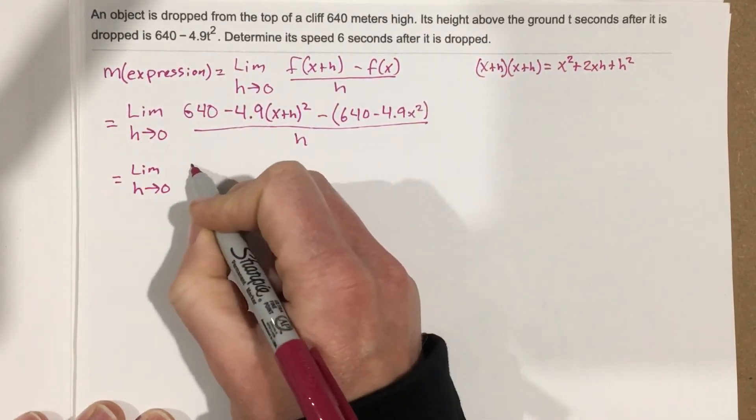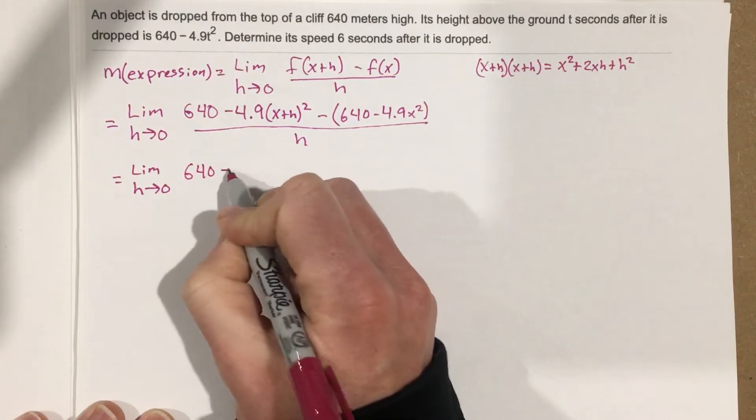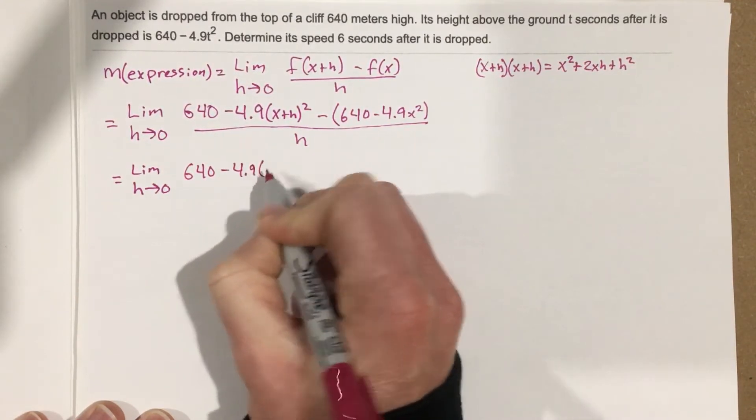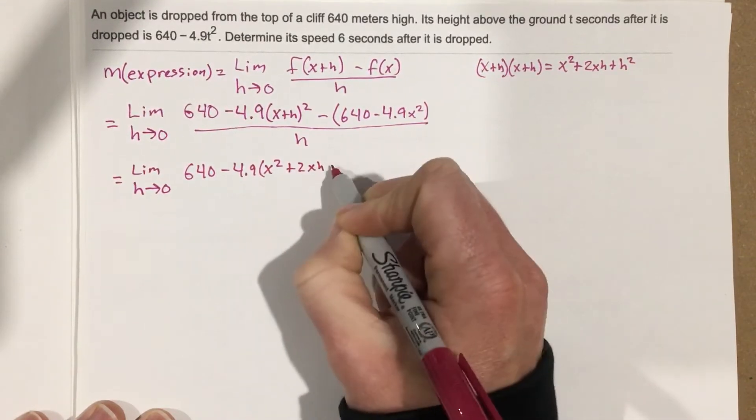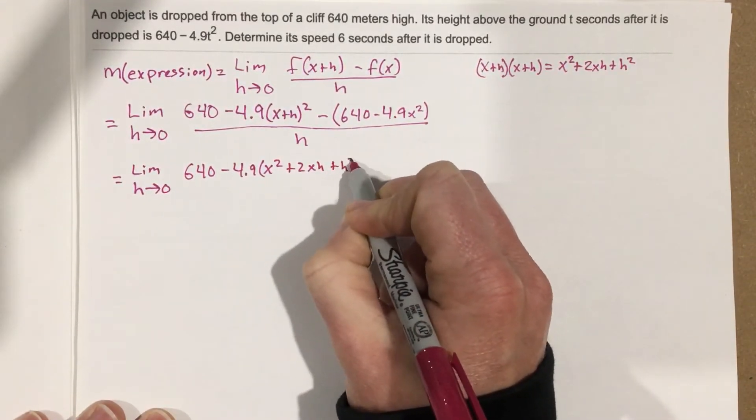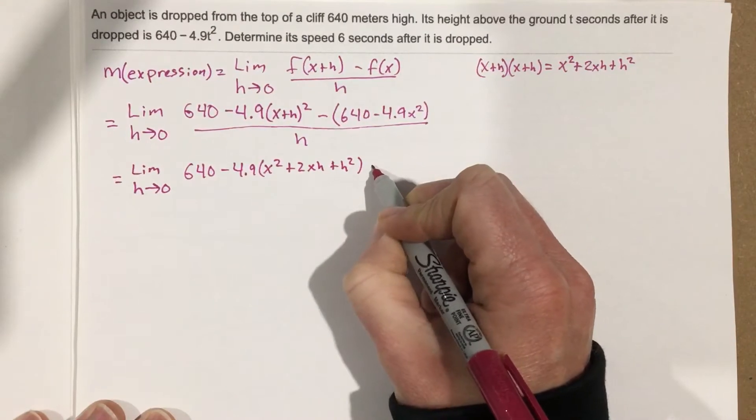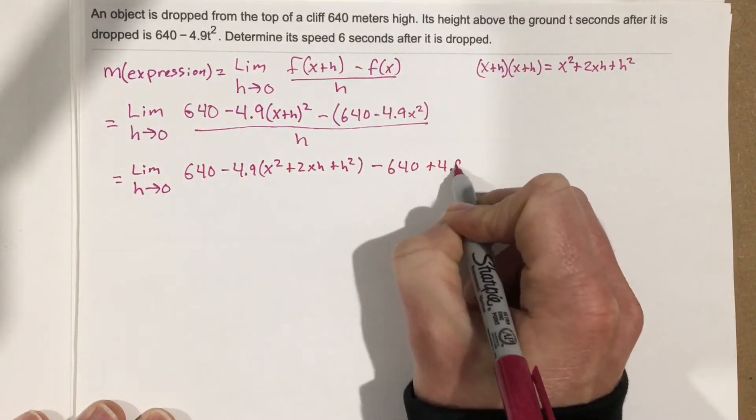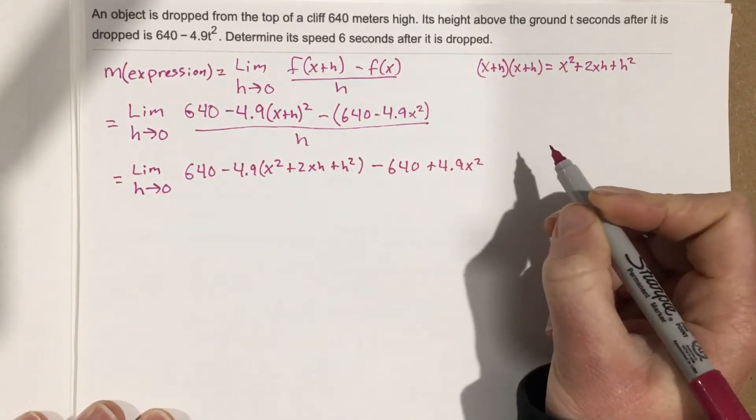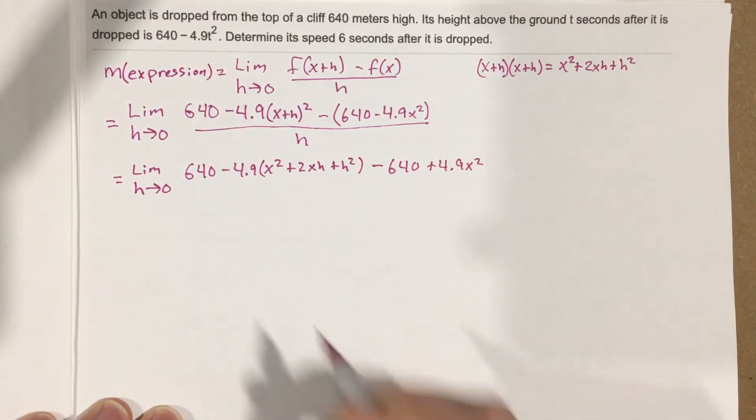Plug that in and you get 640 minus 4.9 times x squared plus 2xh plus h squared, minus 640 plus 4.9x squared. So let's write all over h.